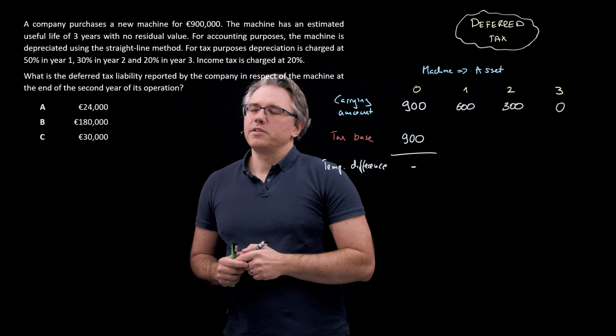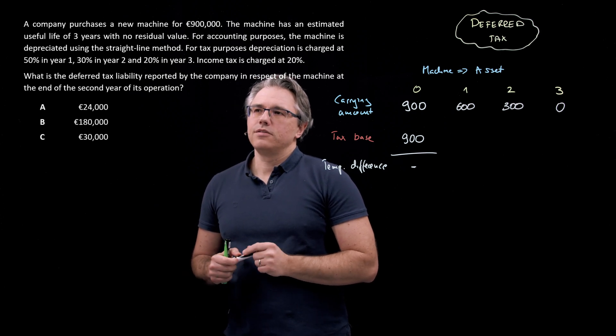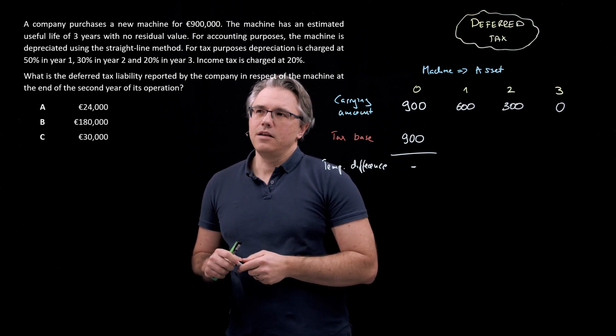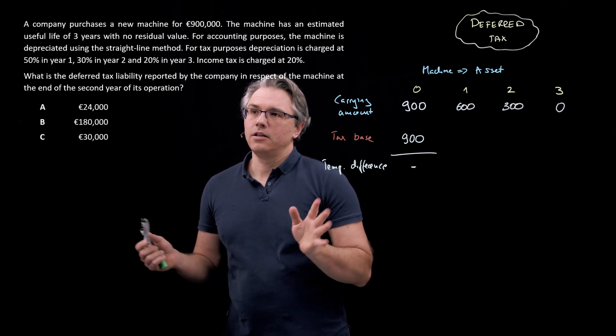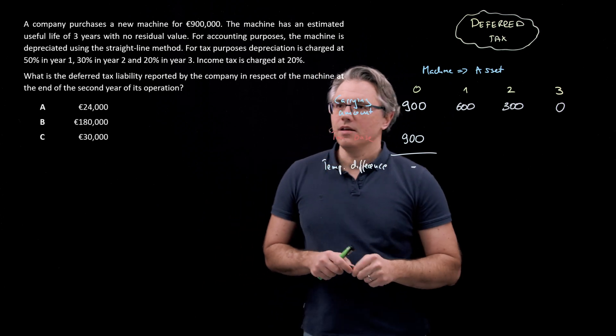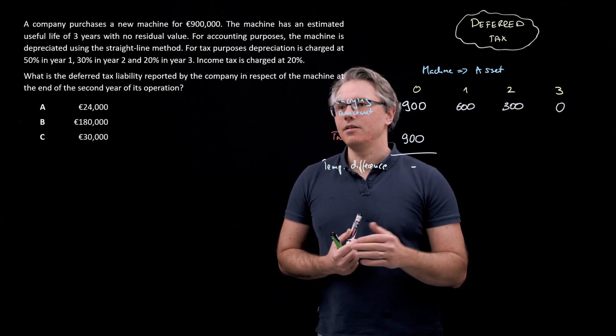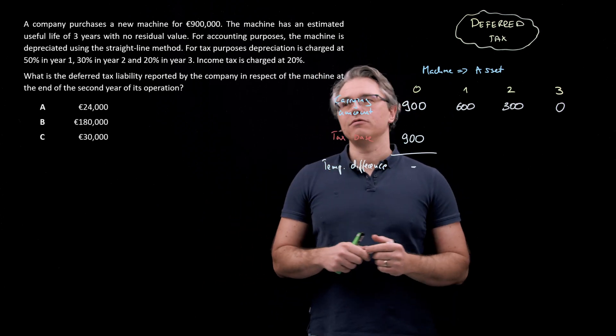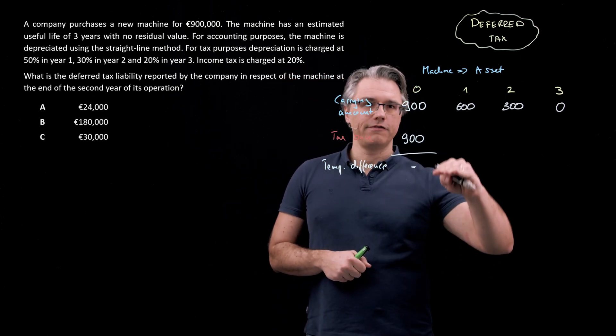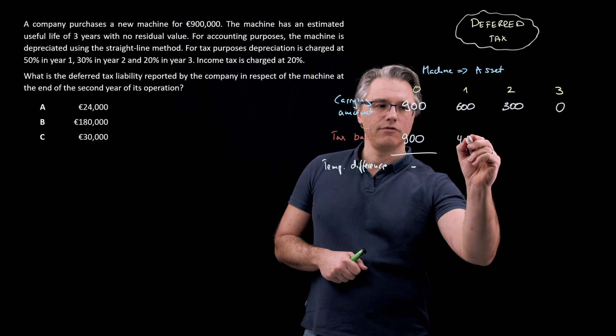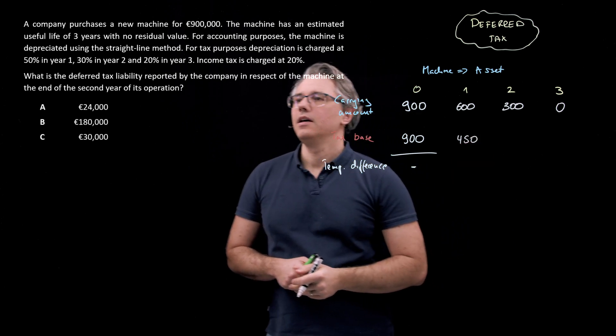For financial reporting purposes, we're told the machine is depreciated using straight line. So it's going to go downwards by 300,000 every year to a level of 600, subsequently 300 at the end of the second year. And it will be depreciated fully down to zero by the end of year three. For tax purposes, we've got 50% in year one, 30% in year two, and 20% in year three.